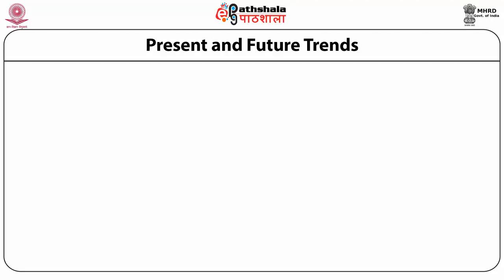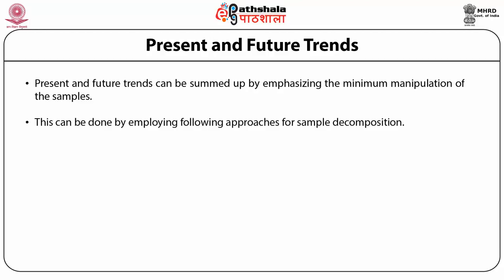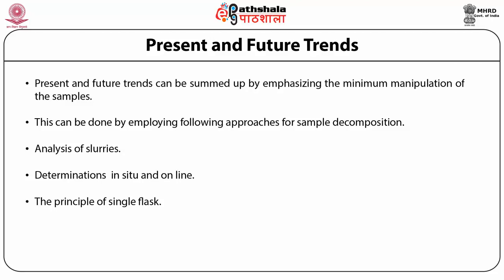Present and future trends in atomic absorption spectroscopy sample preparation emphasize minimum manipulation of the sample — ideally the sample should be usable as it comes, with minimal preparation to avoid all kinds of errors. Approaches for achieving this include analysis of slurries used directly in analysis, in-situ and online decomposition techniques, the principle of using only a single flask to avoid transferring which changes analyte concentration, and automation or robotics as a future trend.